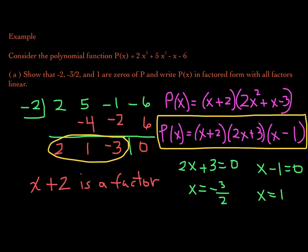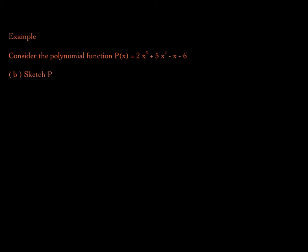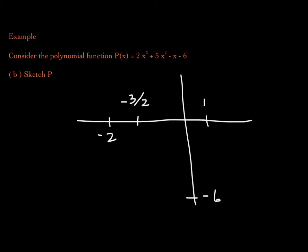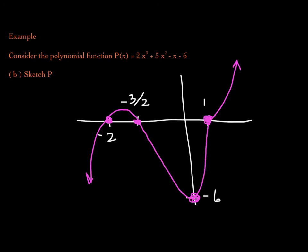Now we want to graph this function. To sketch p, we'll use end behavior. Since the leading coefficient is positive with odd degree, the end behavior is up forever on the right and down forever on the left. We have three x-intercepts: positive 1, negative 3/2, and negative 2. The y-intercept is the constant term, negative 6. We go through these x-intercepts and through that y-intercept to produce the sketch of the function.